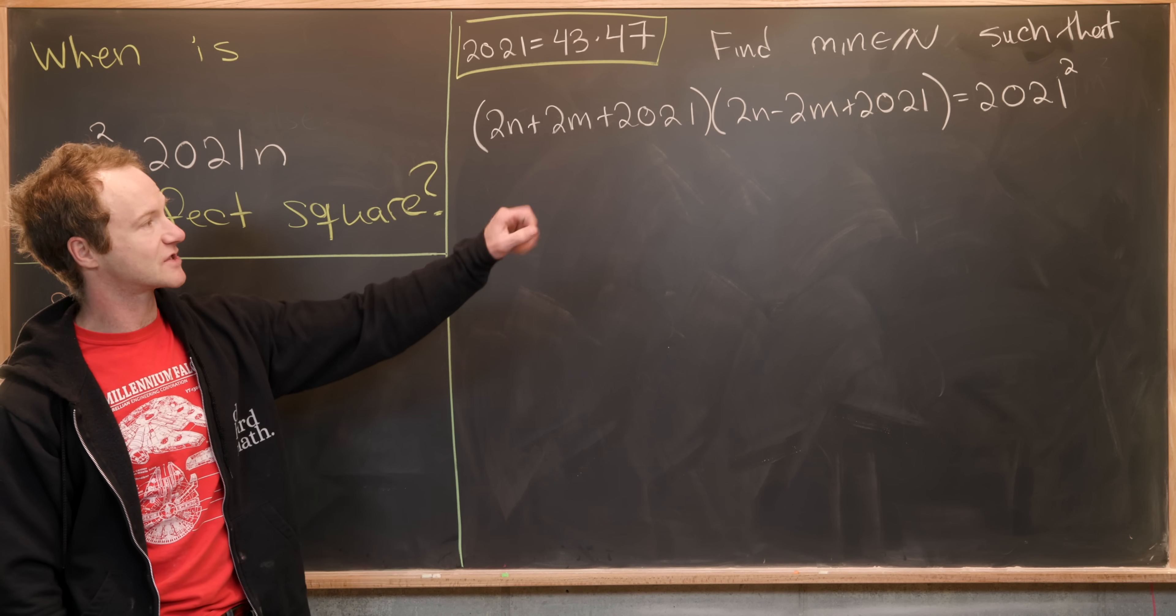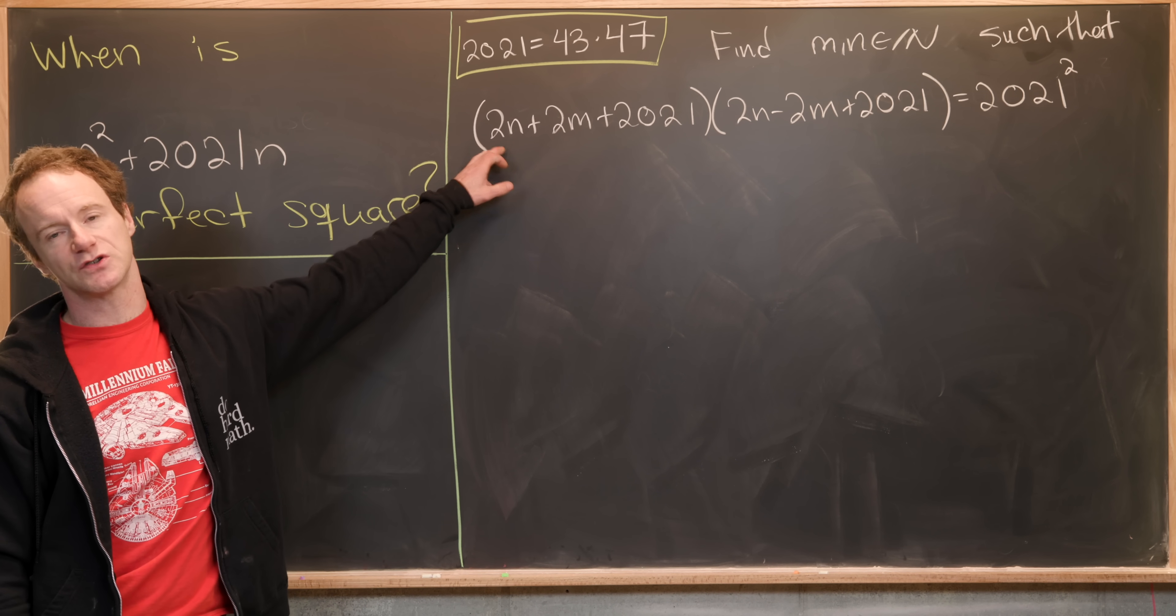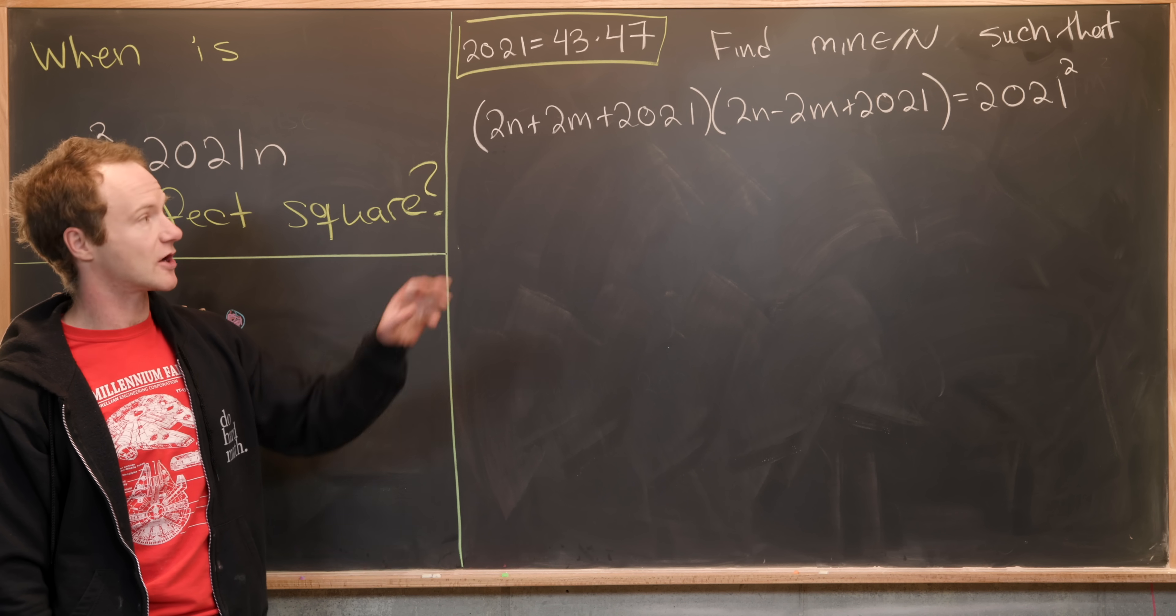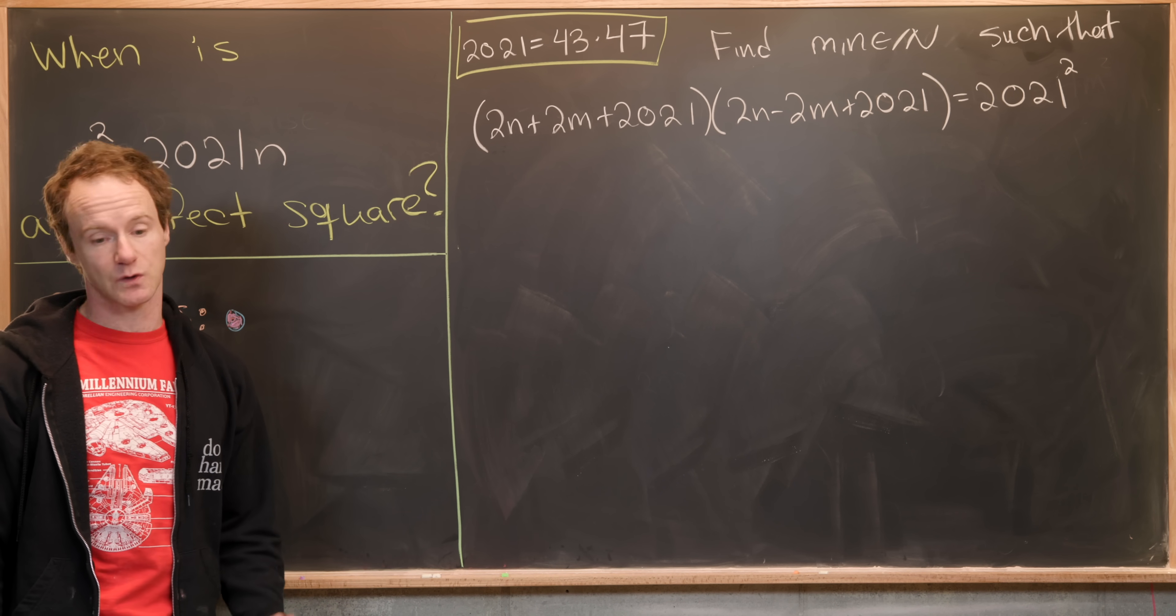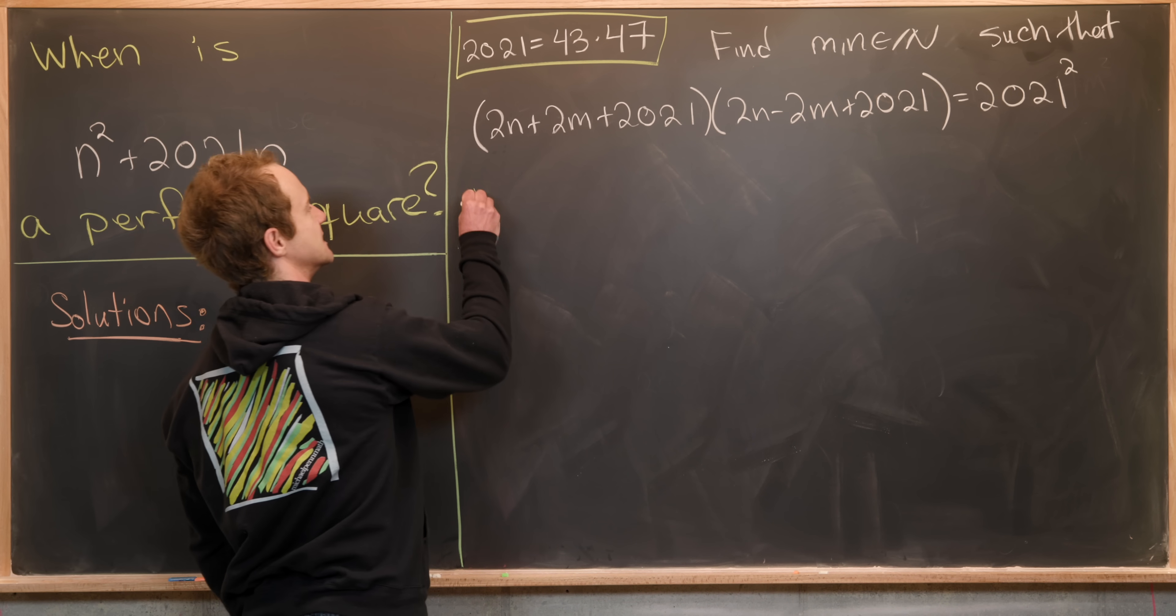So we factored 2021 squared into the product of two integers. So that means we can just look at all the possible factorizations for 2021 squared and set up some systems of equations. So let's maybe do that in a case by case basis.